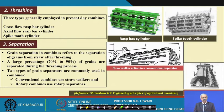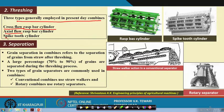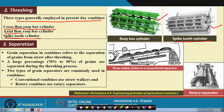Though threshing will be covered separately in later lectures, since it is part of the combine we briefly cover it here. Types of threshing cylinders commonly used in combines are: rasp bar cylinder type, axial flow, cross flow, and spike tooth cylinder. Spike tooth type and rasp bar type are illustrated, and some rotary cutters also use spikes.